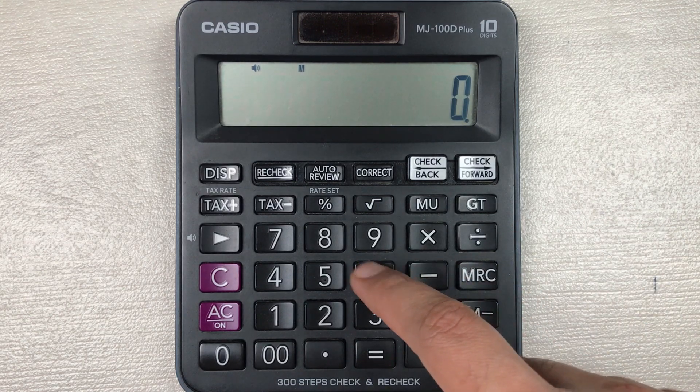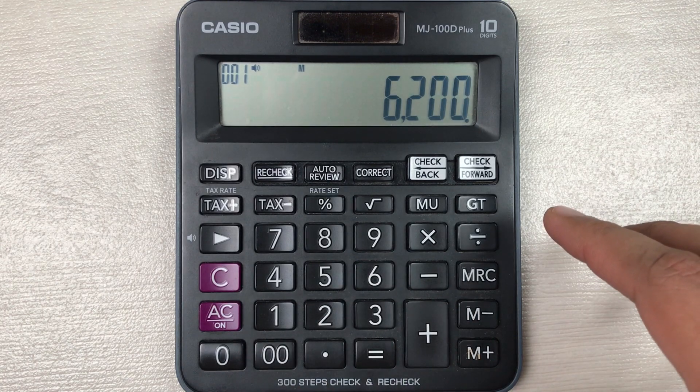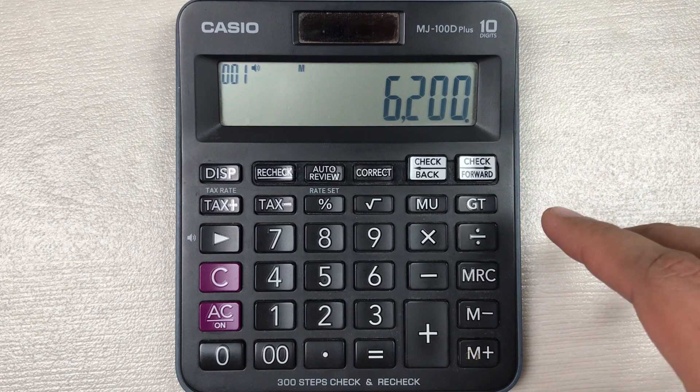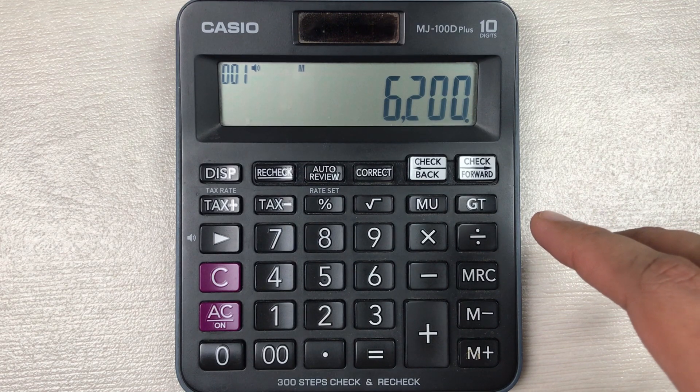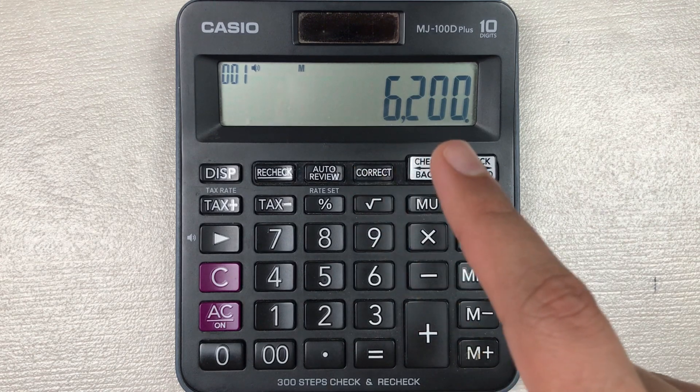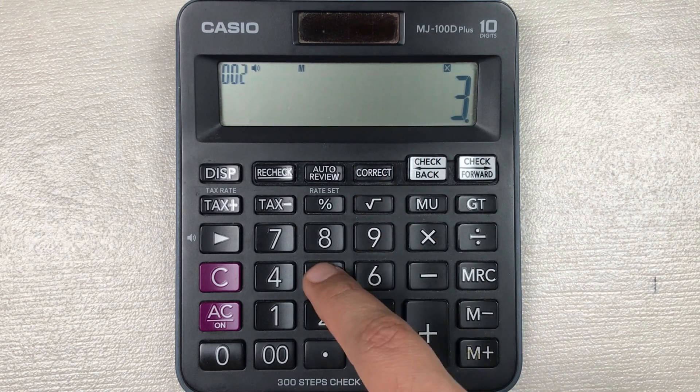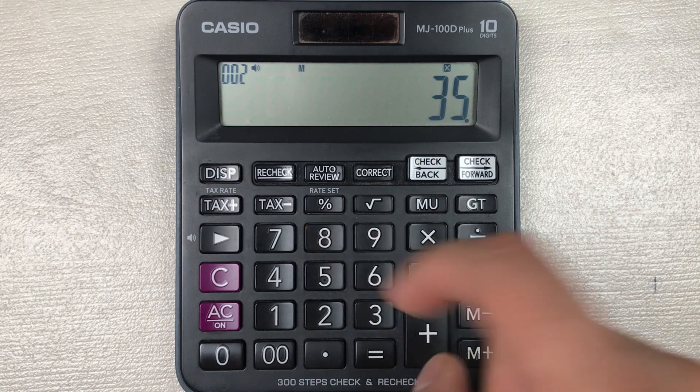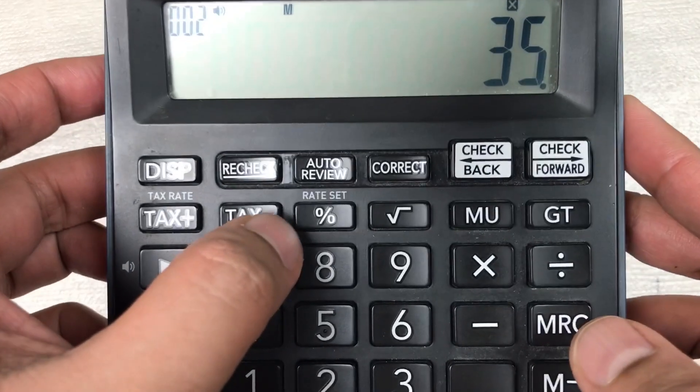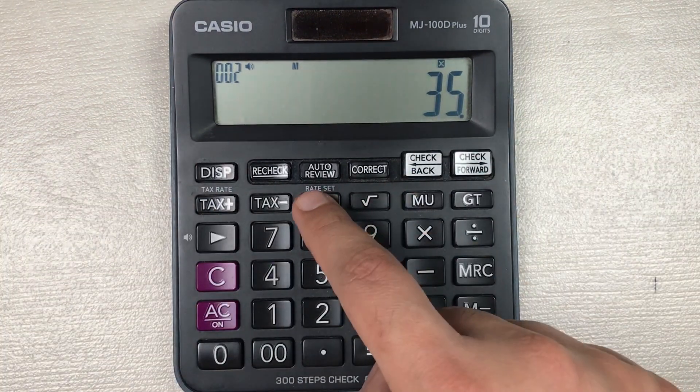And you want to calculate how much will be the final price after 35 percent off. So you type 6200, then you have to multiply it with 35, and then you have to press this percentage button.